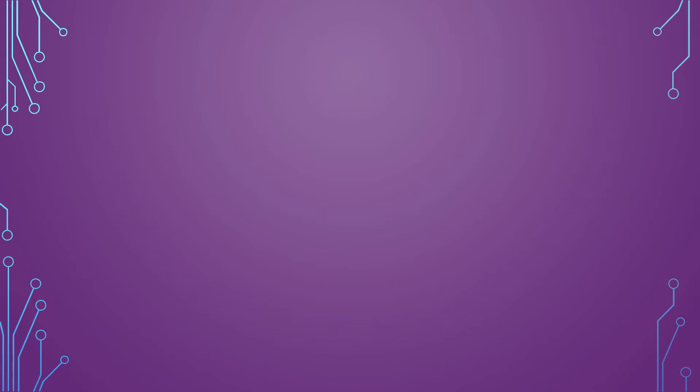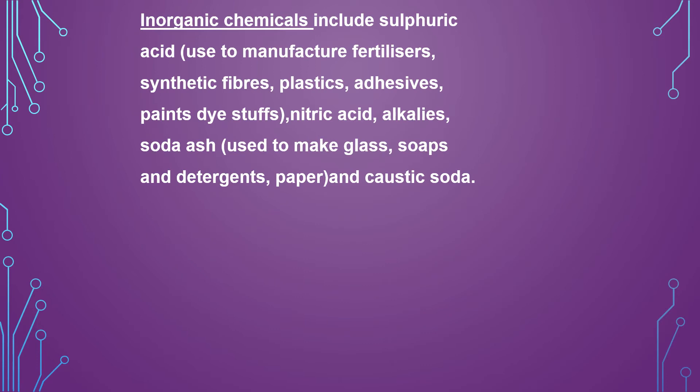Inorganic chemicals include sulfuric acid, used to manufacture fertilizers, synthetic fibers, plastic, adhesive, glue, gum, paint, and dye stuffs. They also include nitric acid, alkalis, and soda ash, which are used to make glass, soap, detergent, paper, and caustic soda.